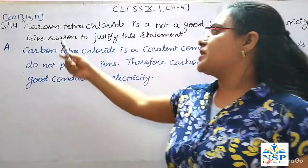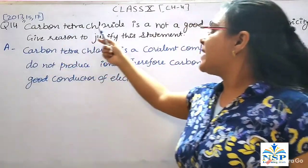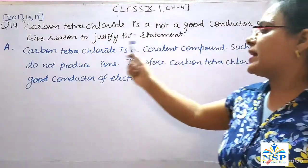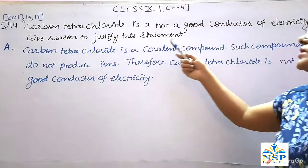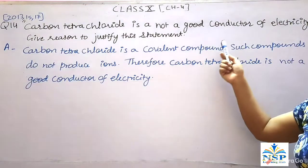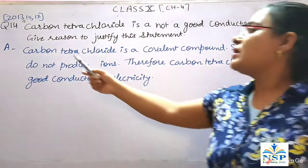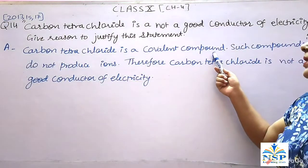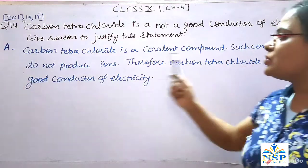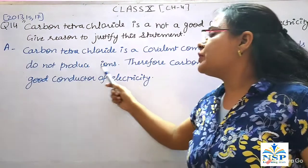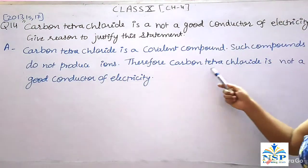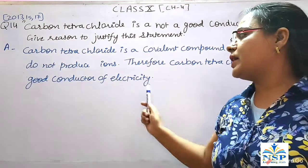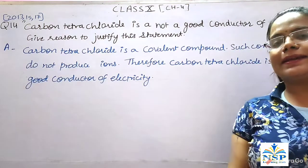Students, next question: Carbon tetrachloride is not a good conductor of electricity — give a reason to justify this statement. Carbon tetrachloride is a covalent compound. Such compounds do not produce ions. Therefore, carbon tetrachloride is not a good conductor of electricity.